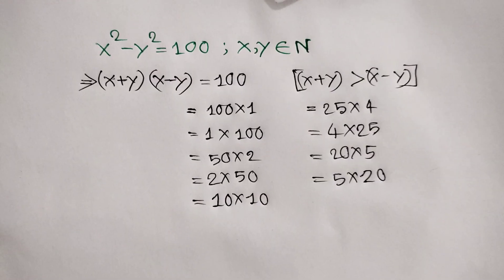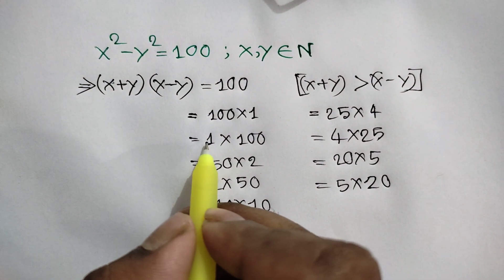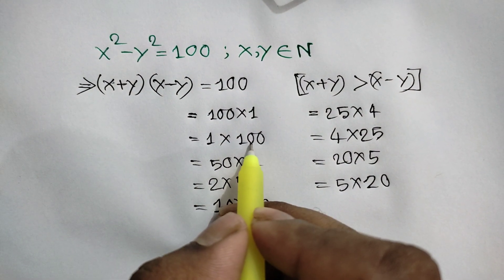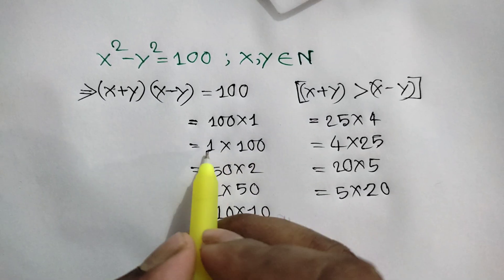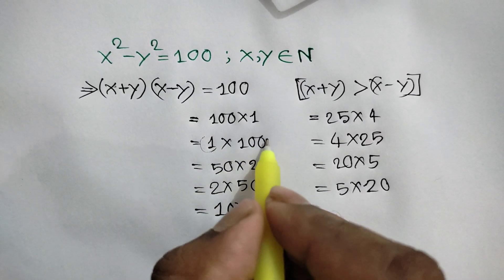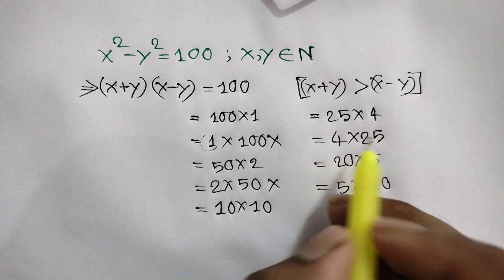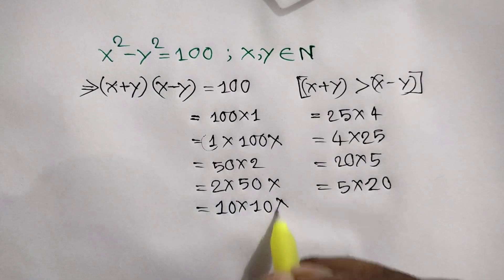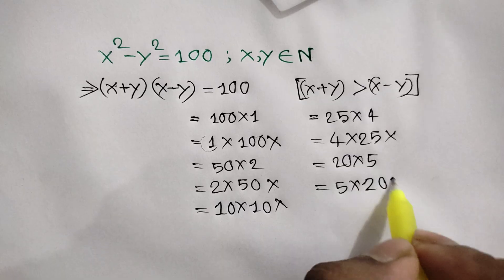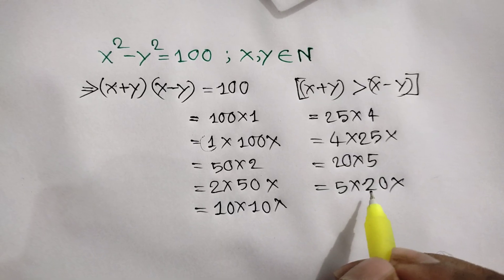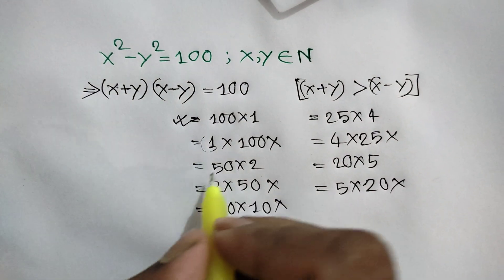The pair 1 times 100 is cancelled out because 1 is less than 100, violating our constraint. Similarly several other reversed pairs are cancelled out. So we are left with a total of 4 cases.